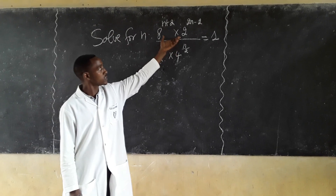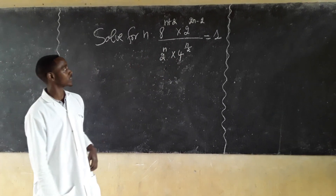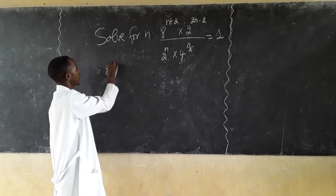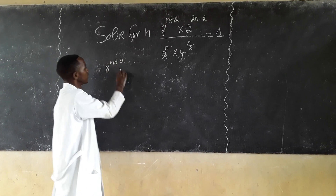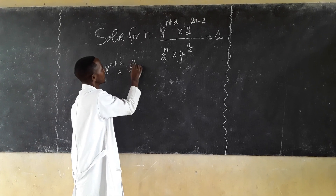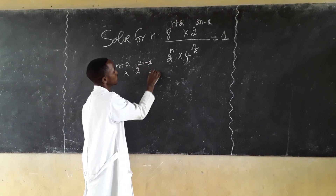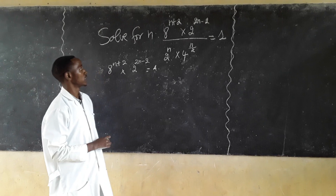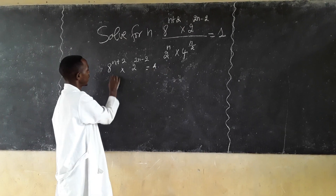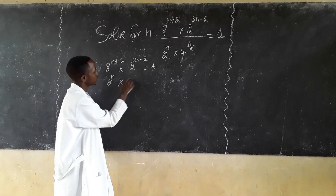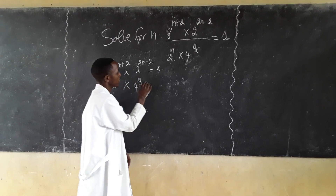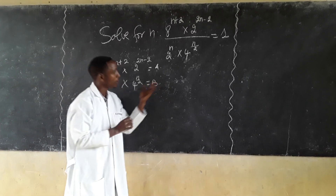Let's divide this equation into two parts. Let H equal 8 power n plus 2 times 2 power 2n minus 2, and let V equal 2n times 4 power n over 2.